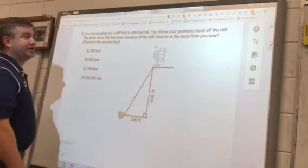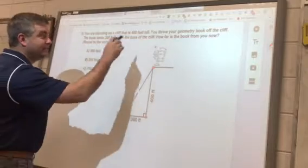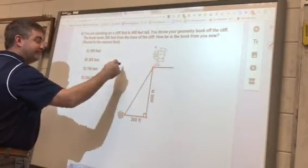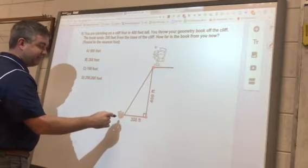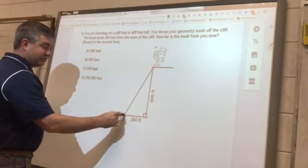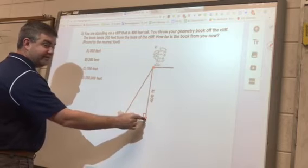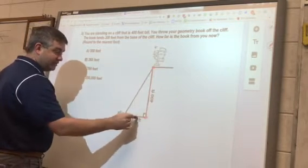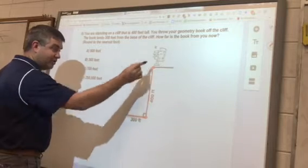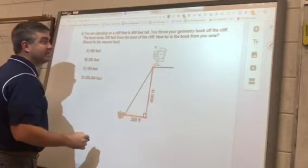You throw your geometry book, why would you want to do that? You throw your geometry book off the cliff, it would do like this and land. Okay, the book lands 300 feet from the base of the cliff. So you were 400 feet tall and the book was 300 feet, thrown 300 feet from the base of the cliff.